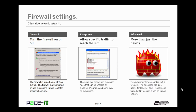The last tab is advanced — that's more than just the basics. If you have two network interface cards that need different firewall settings, that's not a problem with the advanced tab. The advanced tab also allows for logging of firewall traffic. Windows Firewall turns off ICMP responses by default, but it can be turned on from the advanced tab.